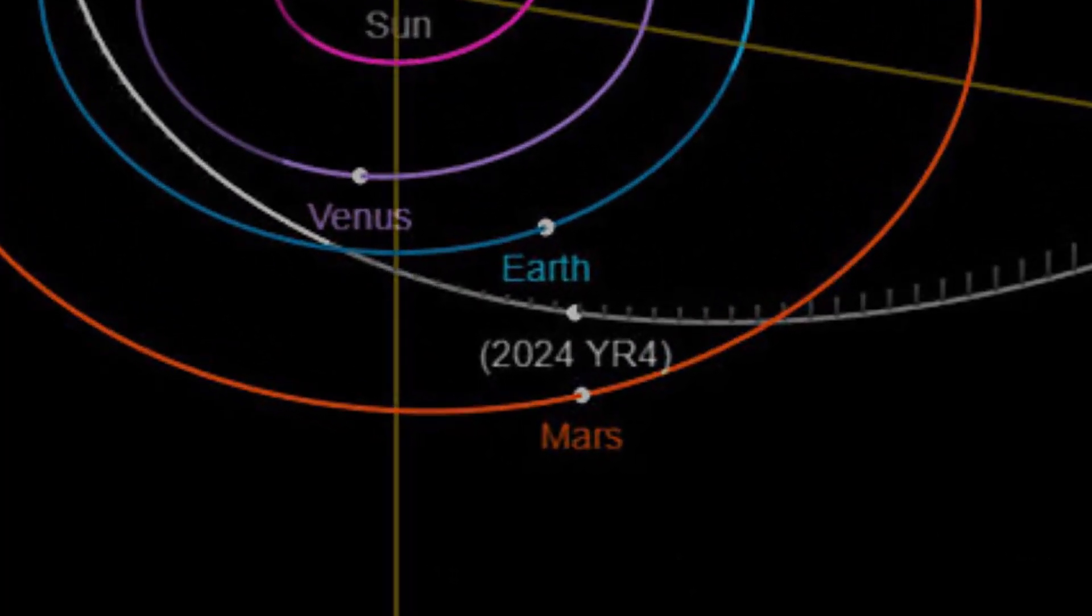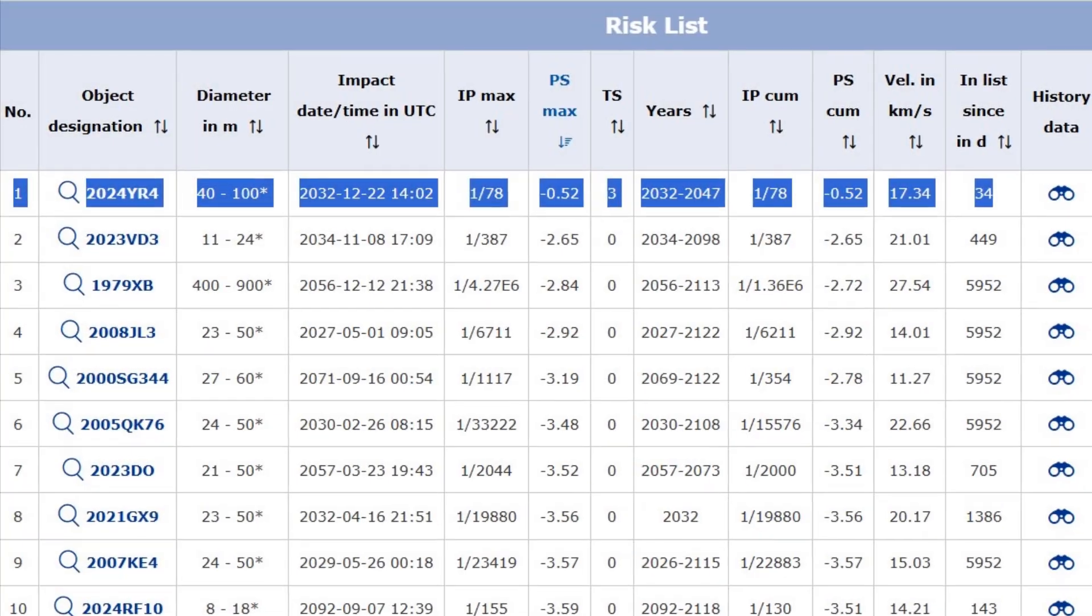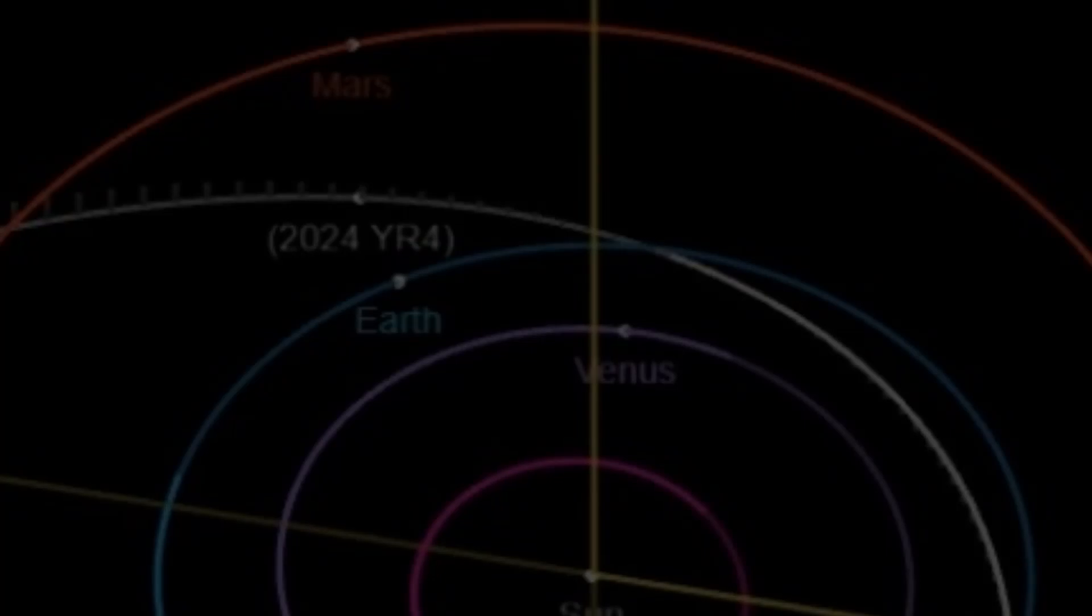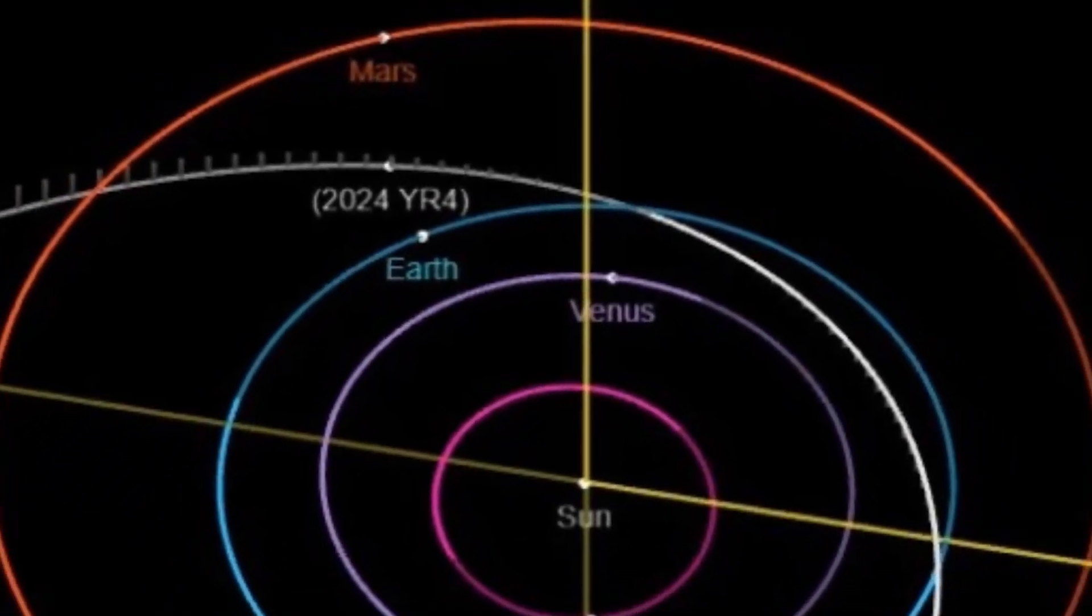However, if it does explode in the atmosphere just like the Tunguska event did, it would likely cause an airburst and widespread shock waves instead of a crater.